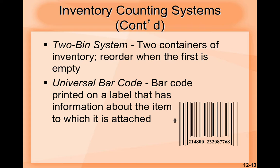We also have the universal barcode — a barcode printed on a label that has information about the item to which it is attached. This is very common in any kind of company. It's easy to use and very practical because it works digitally as part of a software system, and every company uses it.